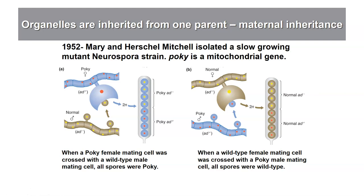Here's a demonstration of maternal inheritance — the first demonstration, shown in a bread mold called Neurospora. This experiment was done in 1952 by a husband and wife team, Mary and Herschel Mitchell. They grew Neurospora, which grows as tubes of haploid cells, and found that their normal strain grew very quickly — if seeded on bread, it would grow extensively within a day or two. However, they found another strain in which the growth was significantly slower, taking a week or more. They called this the pokey strain.